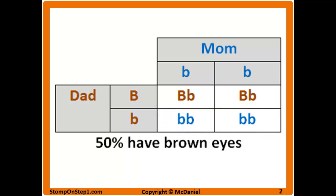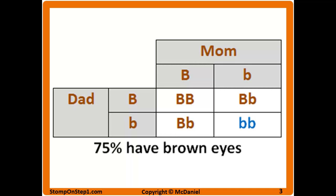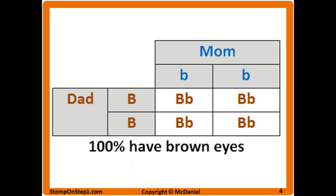Obviously if the couple has four children they might not get exactly two with blue eyes and two with brown eyes, but if they were to have a thousand children then probability and chance would play less of a role. If both parents were brown-eyed heterozygous individuals, you would only have a 25% chance of having a blue-eyed child, and 75% of the time they would have brown-eyed children — 25% homozygous brown and 50% heterozygous brown. Even if the mother is homozygous blue-eyed, all of the children will be brown-eyed if the father is homozygous brown-eyed, and 100% of the children are going to be heterozygous.